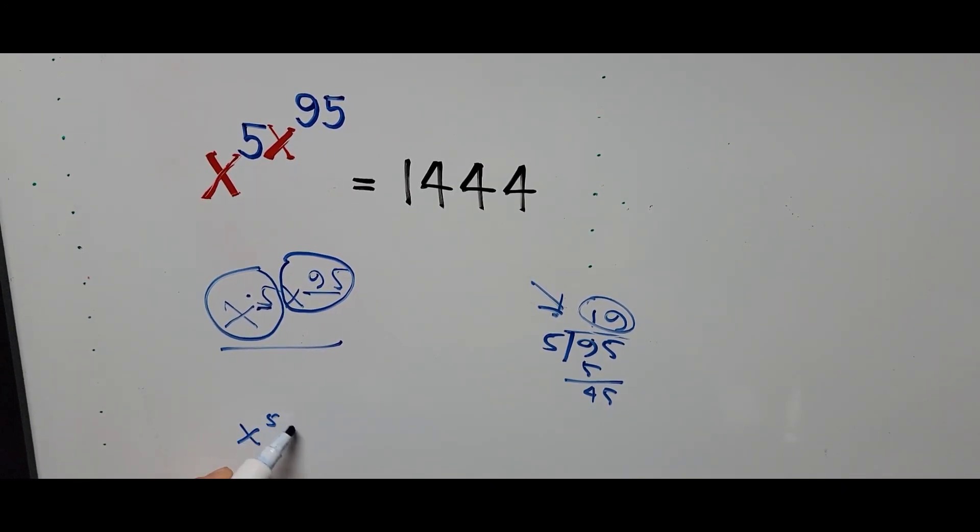x to the power of 5x to the power 95, raised to power 19, equals 1,444 to the power 19.